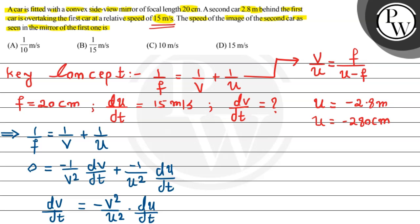So what will we get? Simply, dv/dt will be equal to minus [f/(u - f)]² times du/dt.